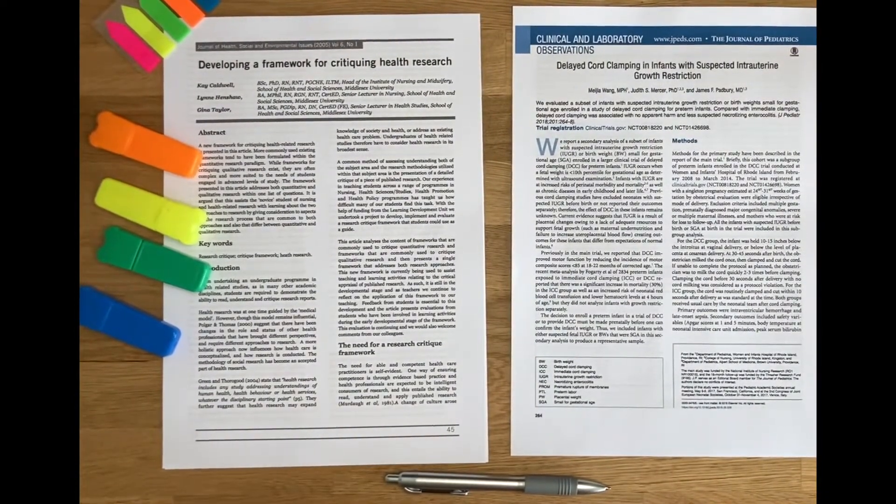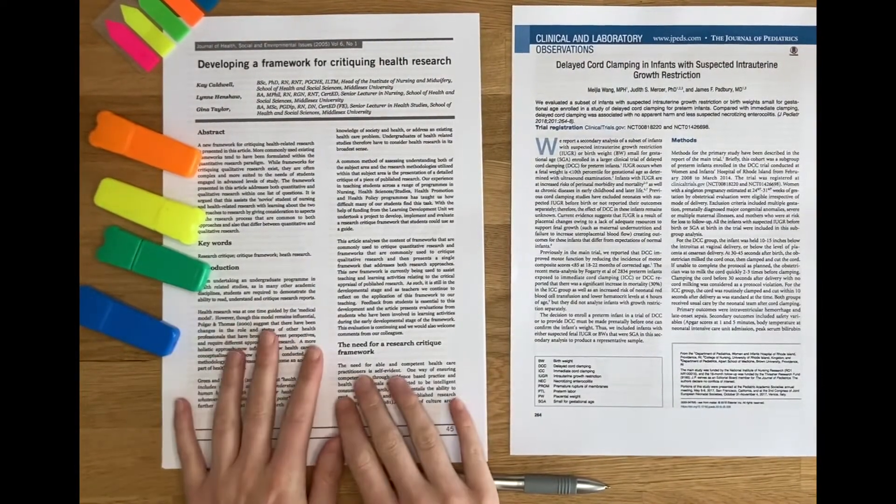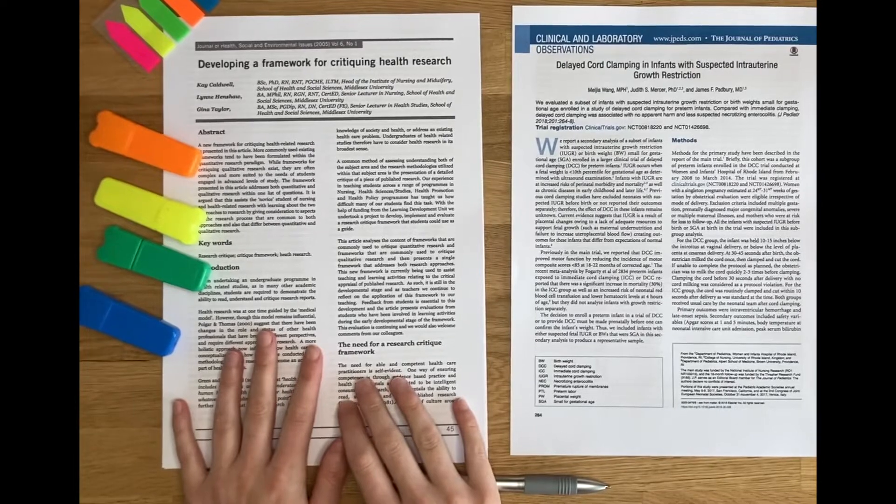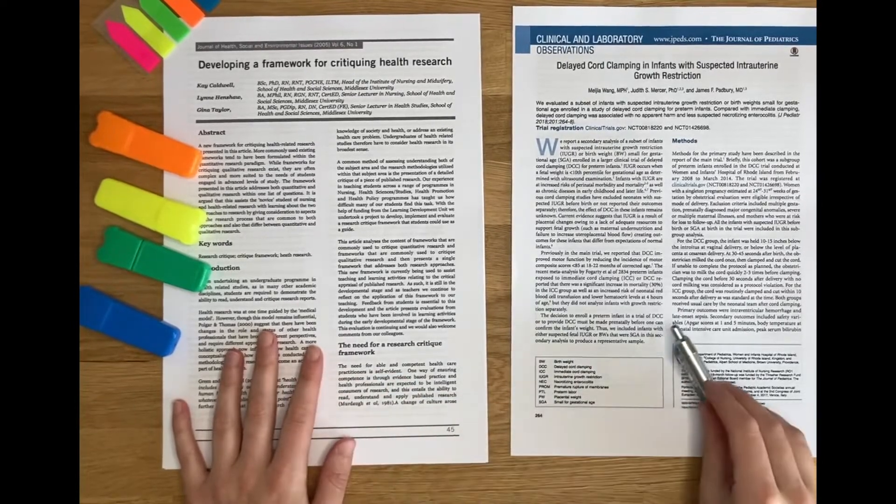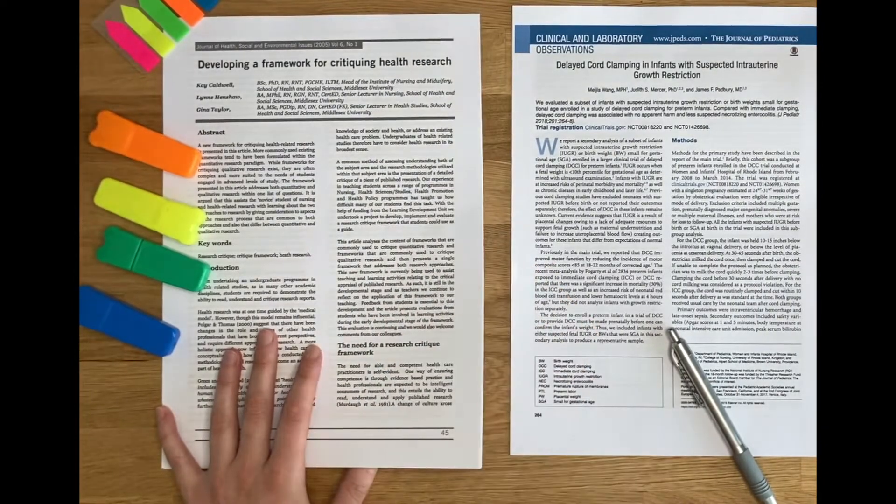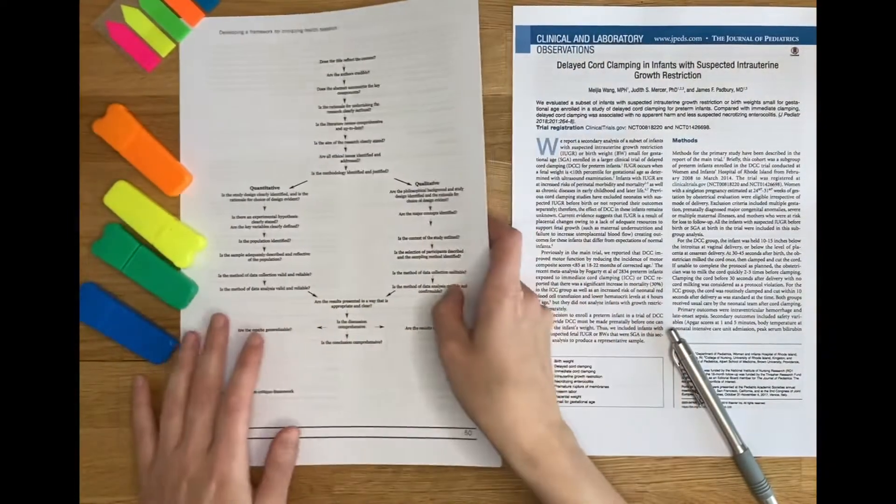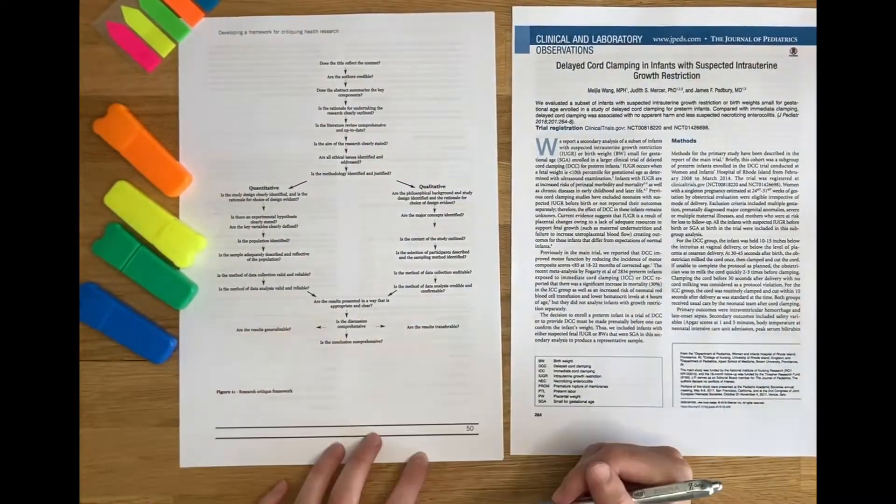Once you're confident with your paper, the next step is to apply your framework. The framework I'm going to be using is Caldwell's framework, this is the one that we've covered in the module. Obviously you will be familiar with it, if you're not you need to make sure you do know it inside out. And I'm going to turn to the page which has the framework as a flowchart.